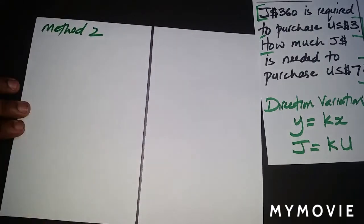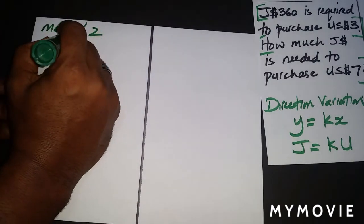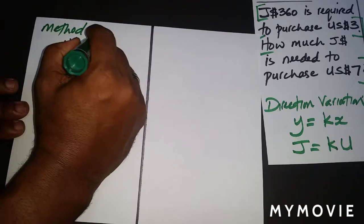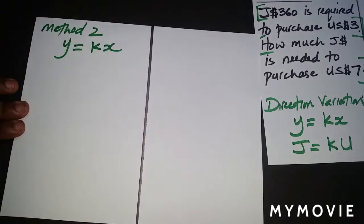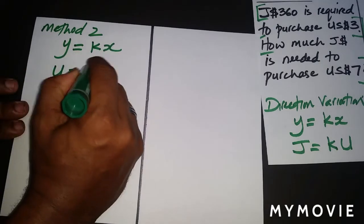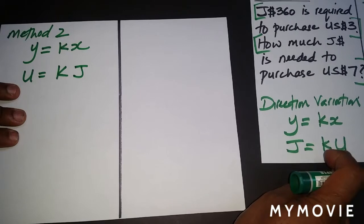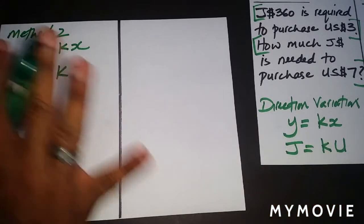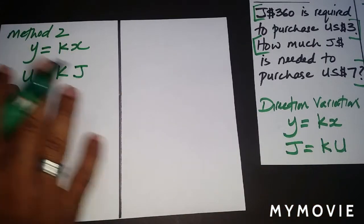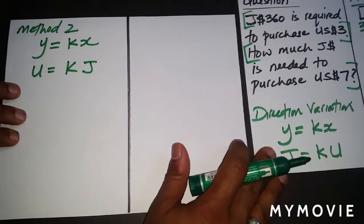Again, we know that the formula for direct variation is y equals kx, but let's say we went ahead and did this. Remember in Method 1 we put J here and then U here. What I'm saying is it doesn't really matter, so put U here and J here and then proceed.